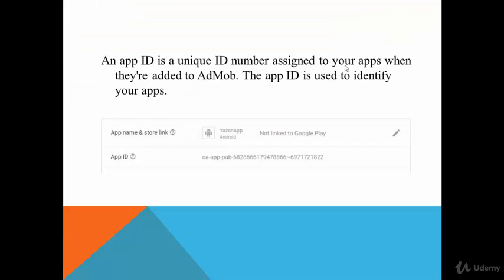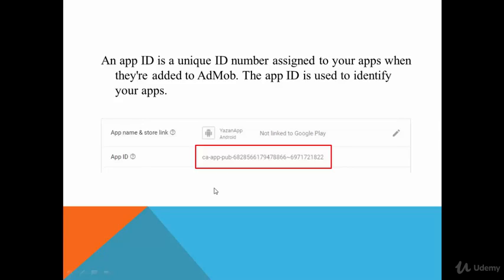After those steps you will get something called an App ID. An App ID is a unique number assigned to your app when it is added to AdMob. For example, if you created an application called Yazan App, Google AdMob will assign an ID for this app so it can be distinguished in the AdMob platform. The App ID is used to identify your app, and you should get a unique ID for each app.